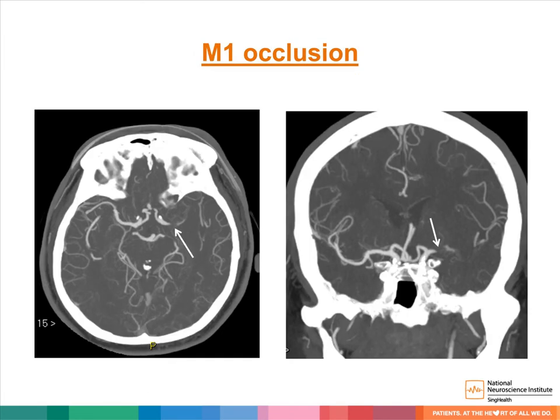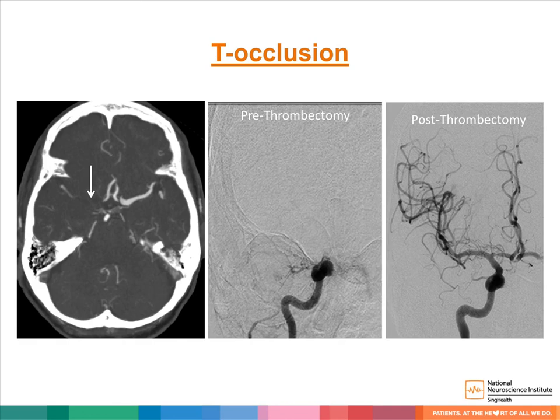In patients presenting with acute ischemic stroke, CTA of the Circle of Willis is performed to identify patients with large vessel occlusions who may benefit from thrombectomy. It is also useful to exclude any other stroke mimic. In this patient, we see an occlusion of the M1 segment of the left middle cerebral artery. This example shows an occlusion of the distal internal carotid artery, with also occlusion of the proximal anterior cerebral artery and the proximal middle cerebral artery on the right side — this is an example of a T occlusion.